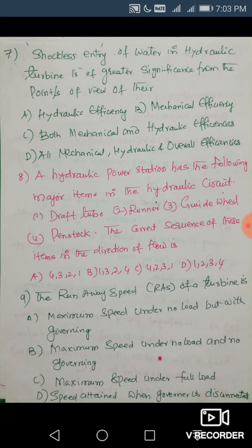Question 8: A hydraulic power station has the following items in the hydraulic circuit — draft tube, runner, guide wheel, and penstock. The correct sequence in the direction of flow is: first penstock, then guide wheels, then runner, then draft tube — i.e., 4, 3, 2, 1. Choose the corresponding answer.